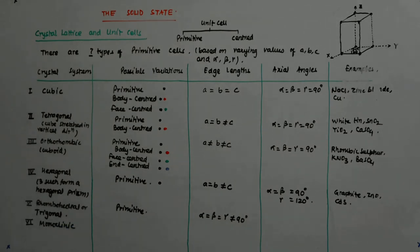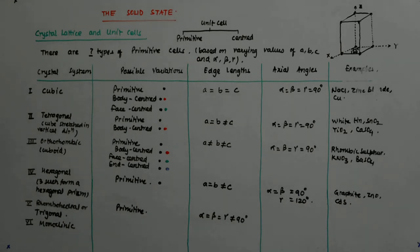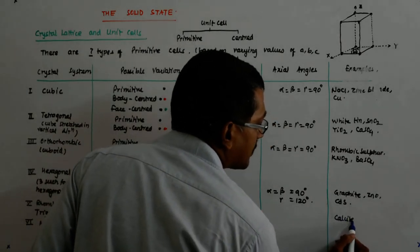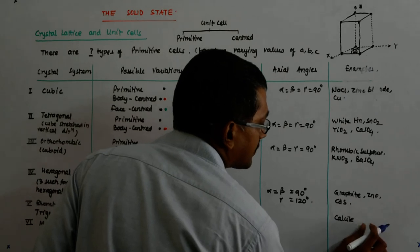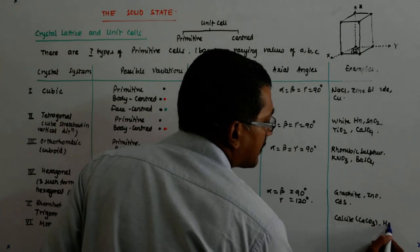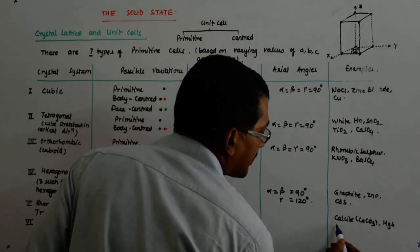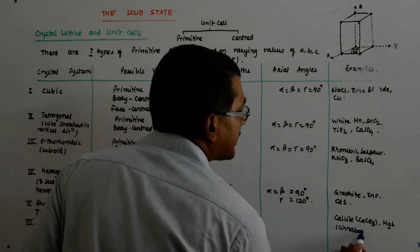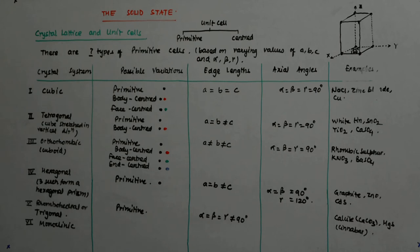For rhombohedral: alpha equals beta equals gamma, and all of them are not 90 degrees. The examples are calcite — which is calcium carbonate — and cinnabar, which is mercuric sulfide. Calcite is very important to understand. Many times you are asked: what is cinnabar? It is mercuric sulfide.